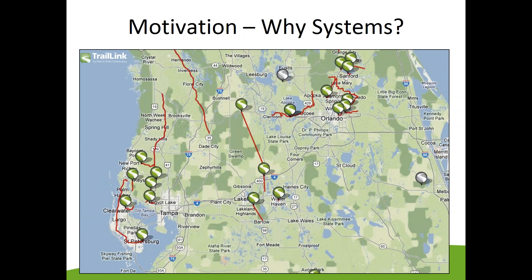So why did RTC decide that we needed to build a new generation of trail planning tools? What you see here is a screenshot from traillink.com, RTC's trail-finding website, showing a section of central Florida. In the past, we haven't really needed any particular quantitative tools to build trails. For 25 years in this country, the trails movement has had tremendous success taking abandoned railroad corridors and other rights-of-way and building beautiful multi-use trails. We can see here in central Florida there are lots of trails — we're already building them.